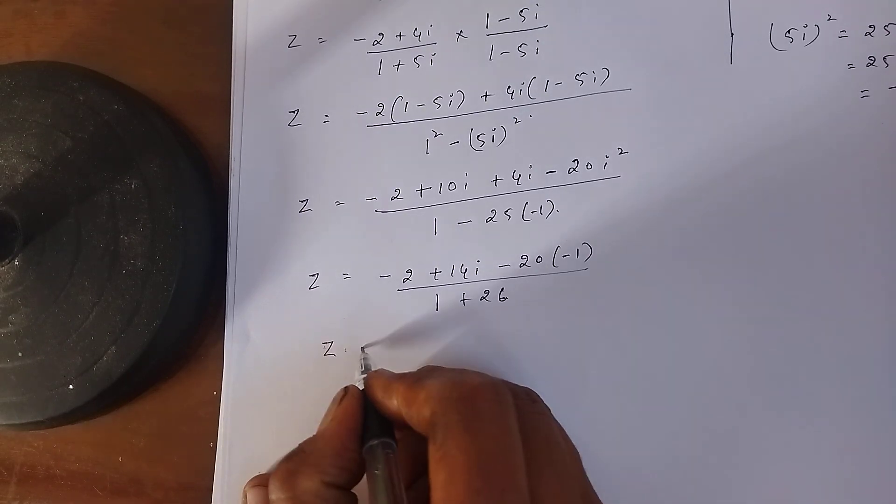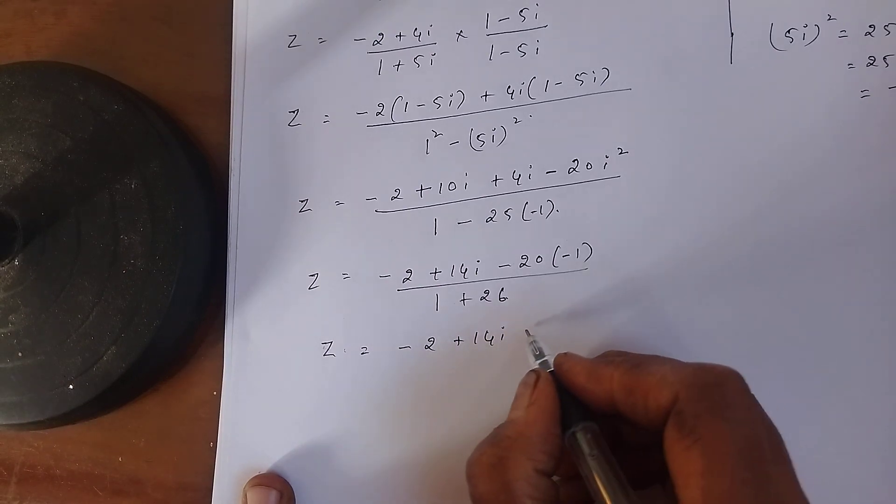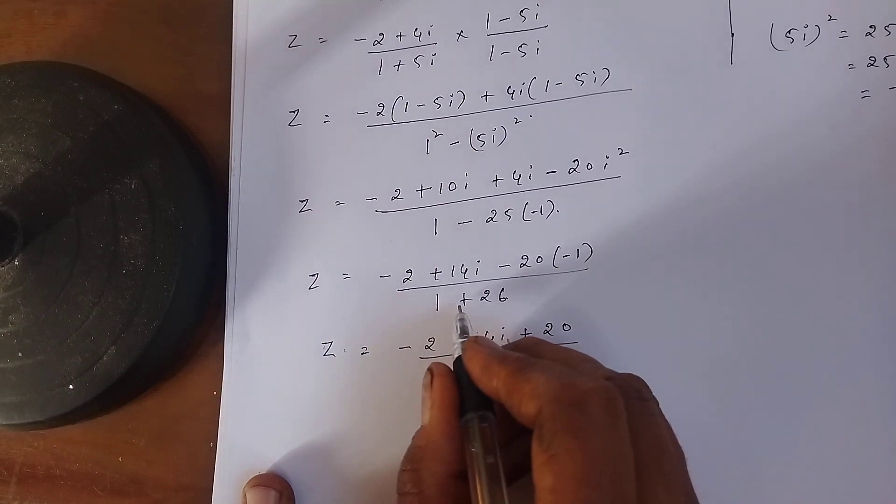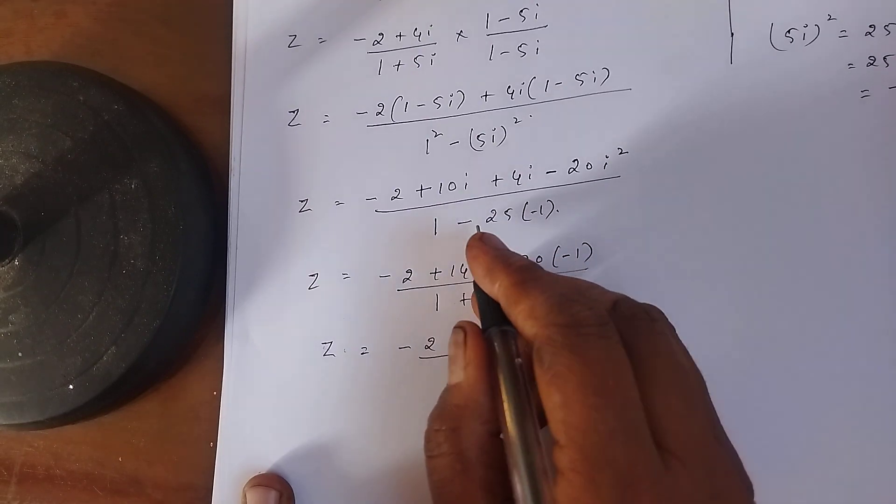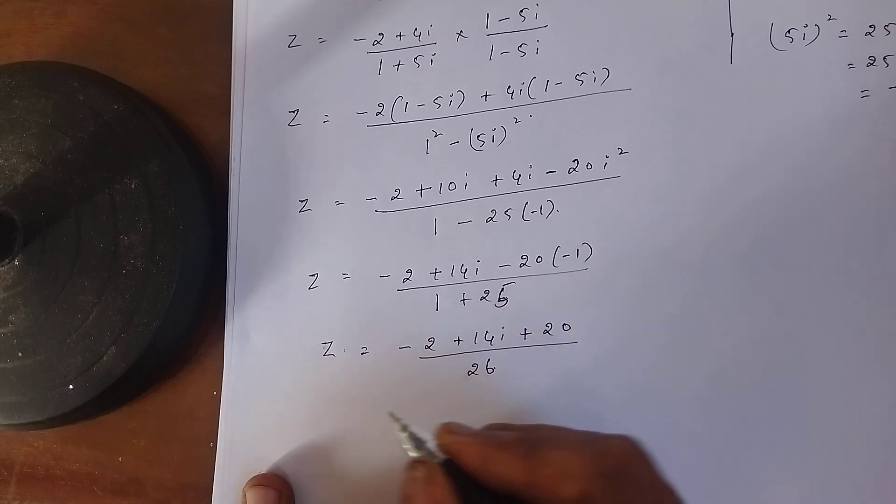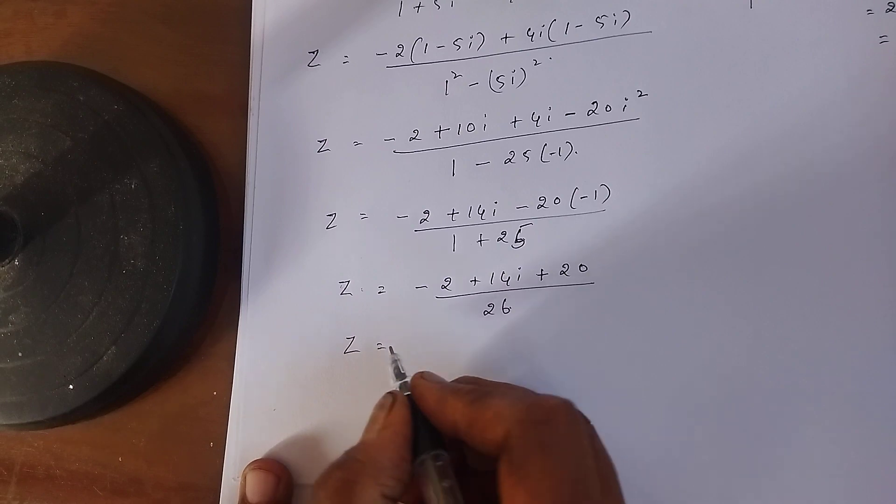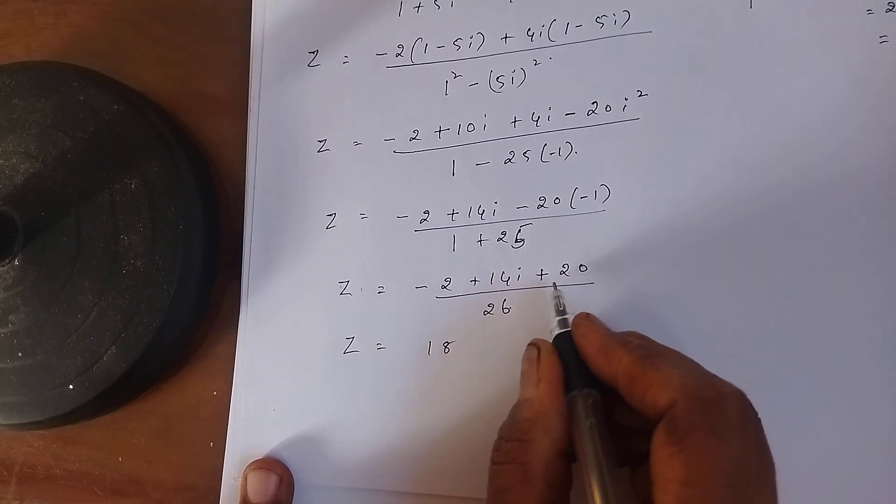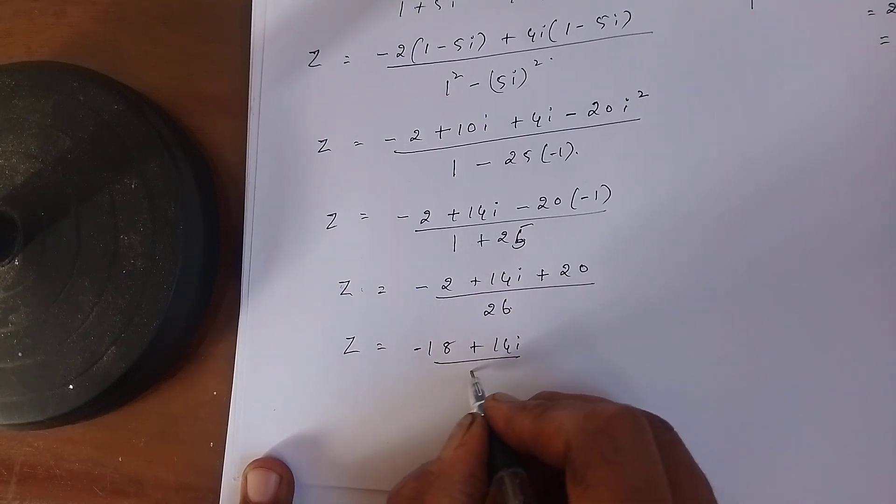Z equals -2+14i, minus into minus is plus 20 divided by 26. 25 minus into minus is plus 25. This is 26. Then Z equals -2+20 is 18, big number is 20, so minus here, plus 14i divided by 26.